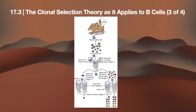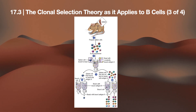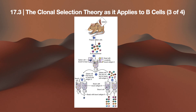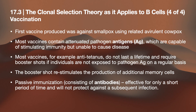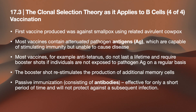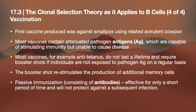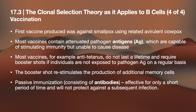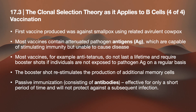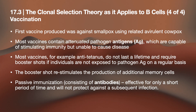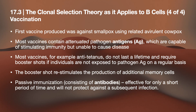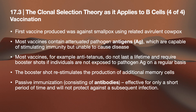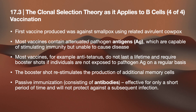This is an experimental demonstration using murine spleen cells showing bound and unbound cell populations. For vaccination as applied to the clonal selection theory: the first vaccine was produced against smallpox using a related avirulent cowpox. Most vaccines contain attenuated pathogen antigens, stimulating immunity but unable to cause disease. For example, the antitetanus vaccine does not last a lifetime and requires booster shots. If individuals are not regularly exposed to pathogen antigens, a booster shot stimulates the production of additional memory cells — as in COVID. Passive immunization using antibodies is effective only for a short period and will not protect against a subsequent infection.